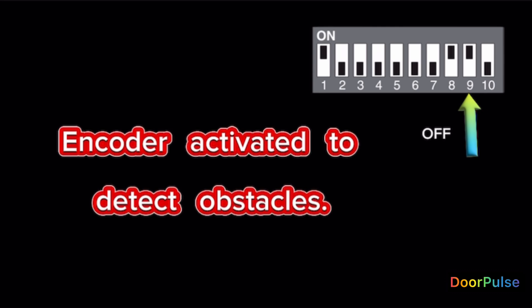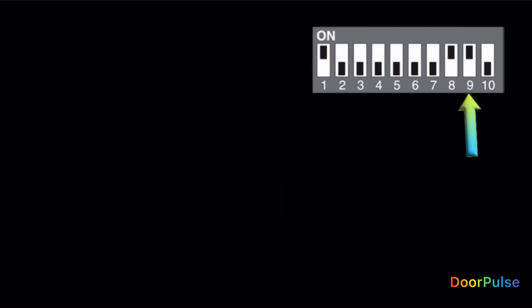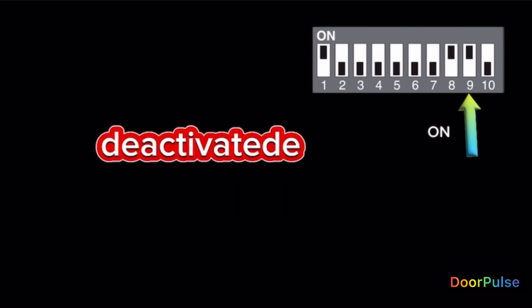Switch 9 OFF. Encoder activated to detect obstacles. Switch 9 ON. Deactivated.